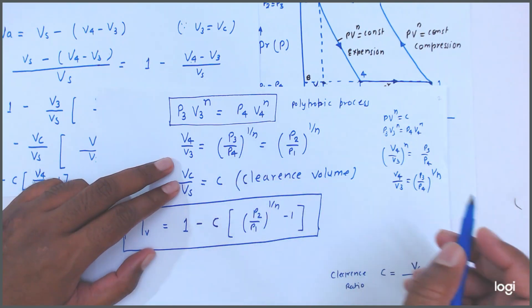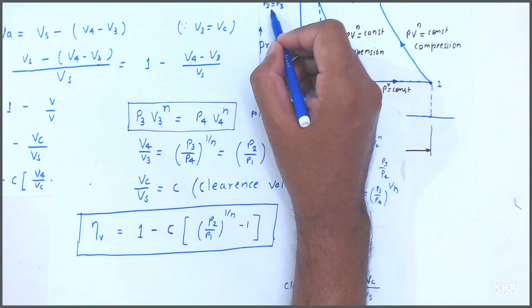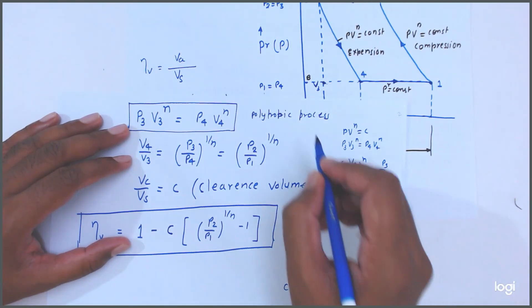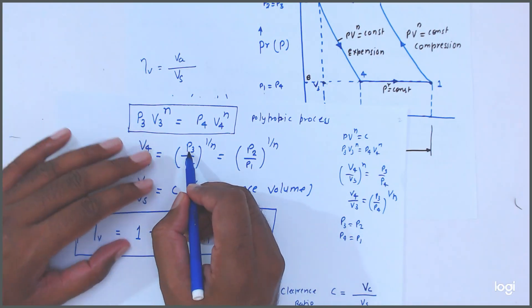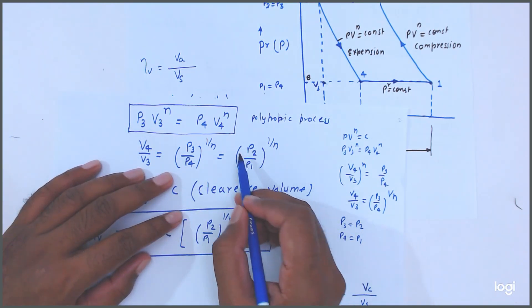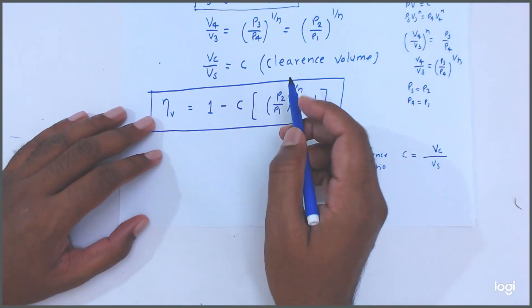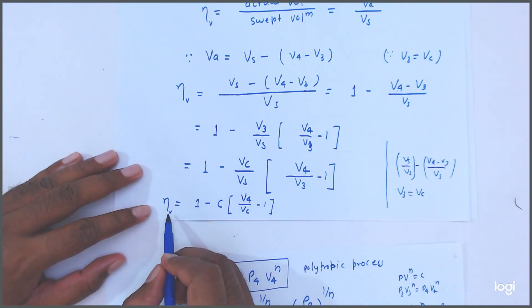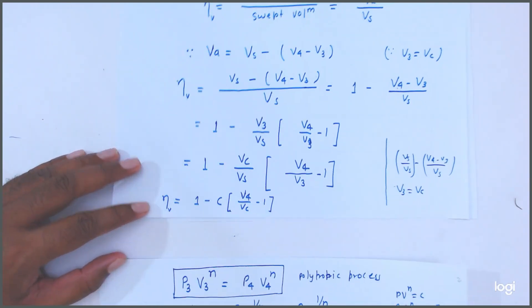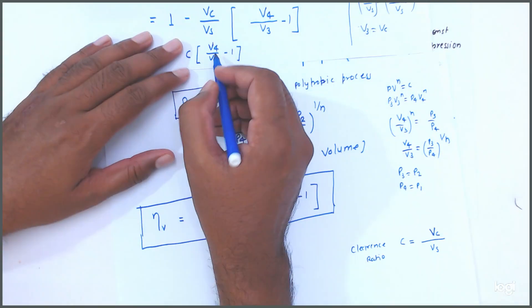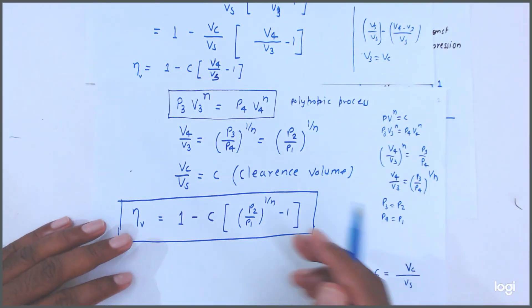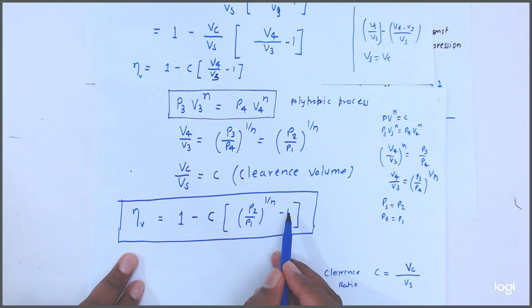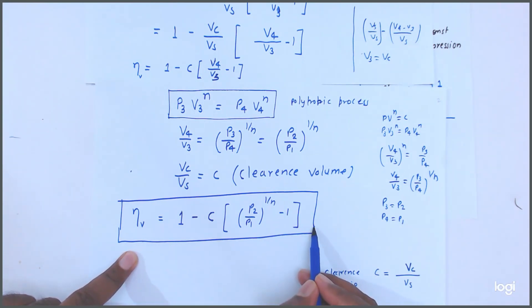We also know that P3 = P2 and P4 = P1. So V4/V3 = (P2/P1)^(1/N). Substituting this value, efficiency = 1 minus C times [(P2/P1)^(1/N) minus 1]. So this is the volumetric efficiency formula for a reciprocating compressor with clearance volume.